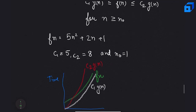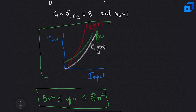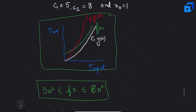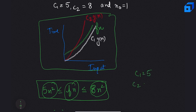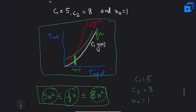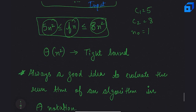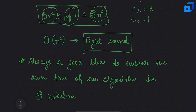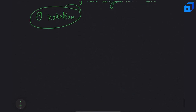For f(n) = 5n² + 2n + 1, with c1 = 5, c2 = 8, and n₀ = 1, we can see that f(n) < 8n² and f(n) > 5n². After n₀, c2·g(n) is always greater than f(n) and c1·g(n) is always less than f(n). So Theta(n²) is the tight bound of our algorithm, and it's always a good idea to evaluate the runtime in Theta notation.